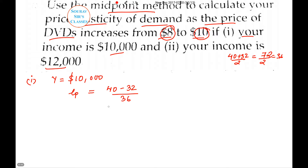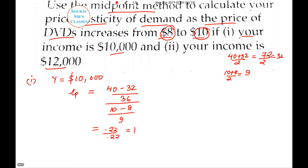That is the quantity part. Now divided by the price part: 10 minus 8, divided by the midpoint of price, which is 10 plus 8 divided by 2, equaling 9. So we get 2 divided by 9. This gives us 0.22 divided by 0.22, which equals 1. So the elasticity is 1 — it is unit elastic.